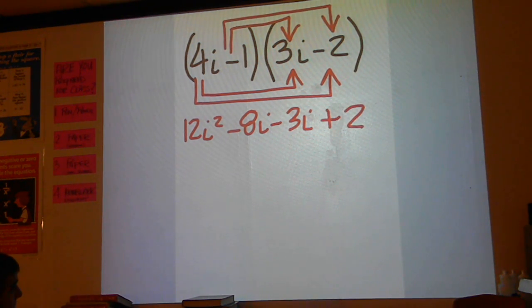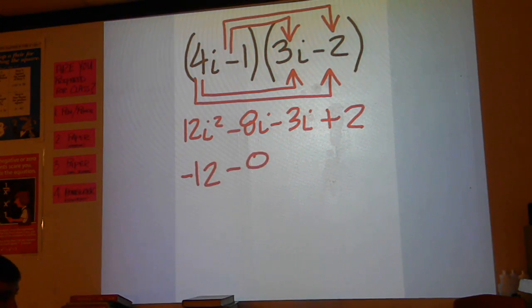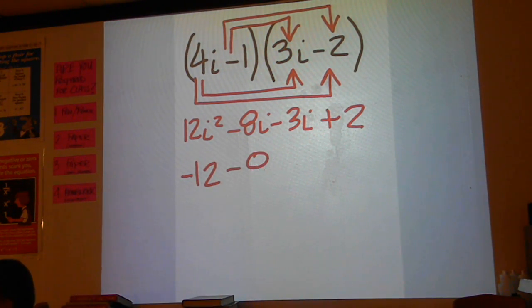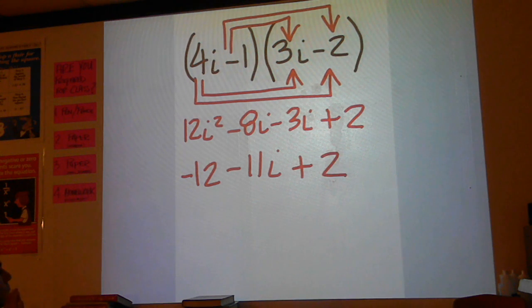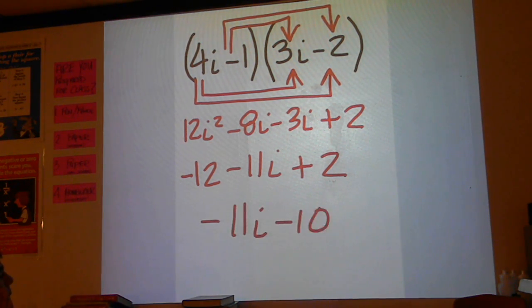Now out here with the 12i squared, let's go ahead and make that minus 12, and then instead of minus 8i and minus 3i, let's simplify that — that should be minus 11i, and then plus 2. Minus 12 plus 2 is going to be minus 10. So there's your final answer.